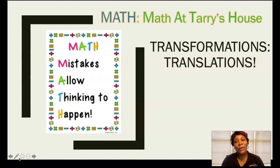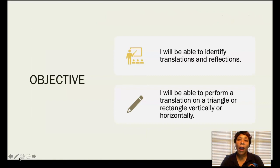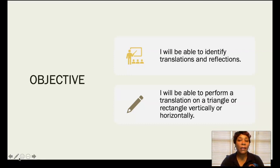Today we're going to be dealing with transformations, specifically thinking about translations. The things you're going to need today: your notebook, a pencil, graph paper if you have it, and also colored pencils. Our objective of the day: I will be able to identify translations and reflections, and I will be able to perform a translation on a triangle or rectangle vertically or horizontally.